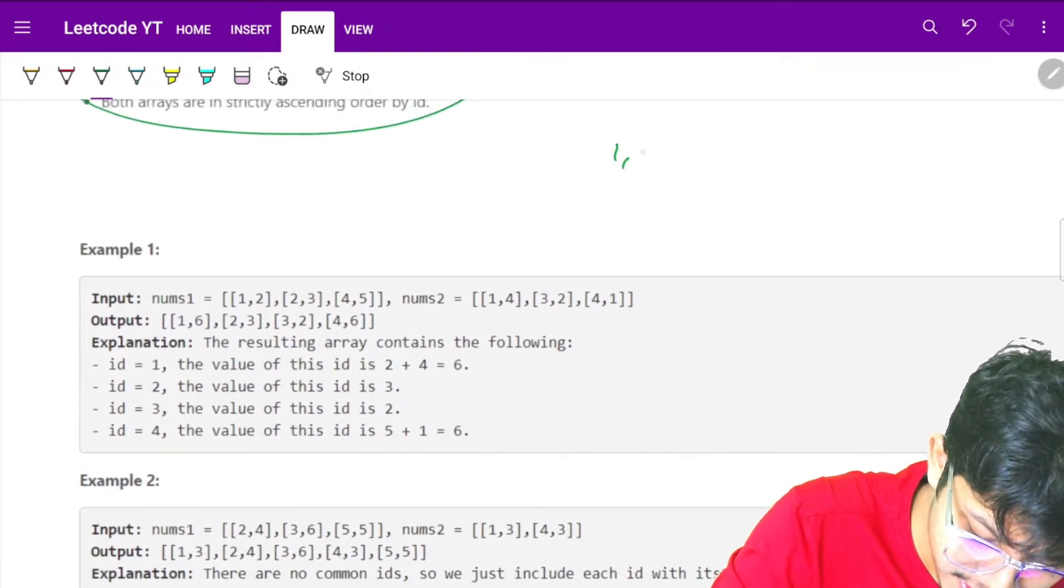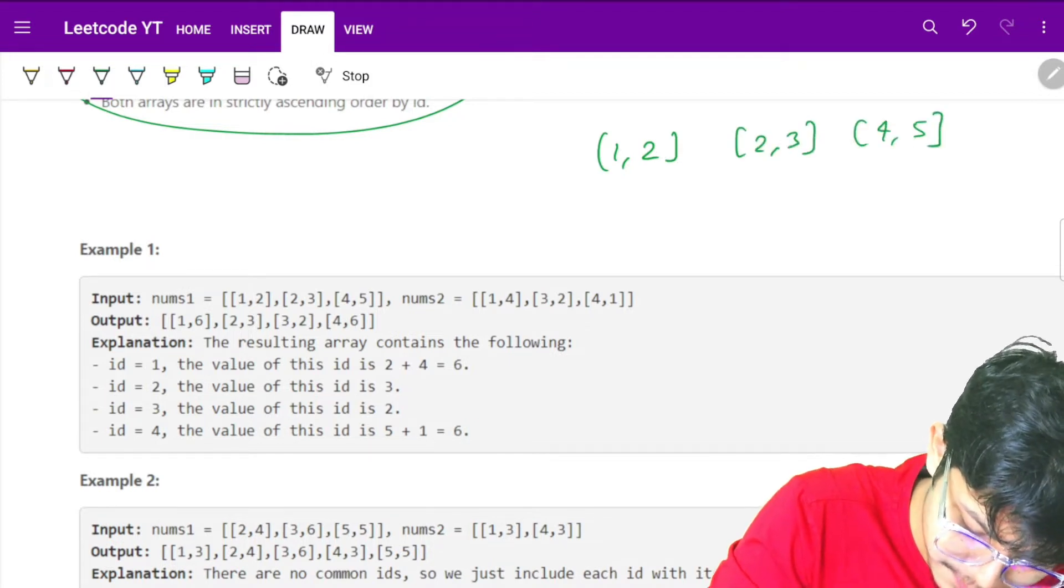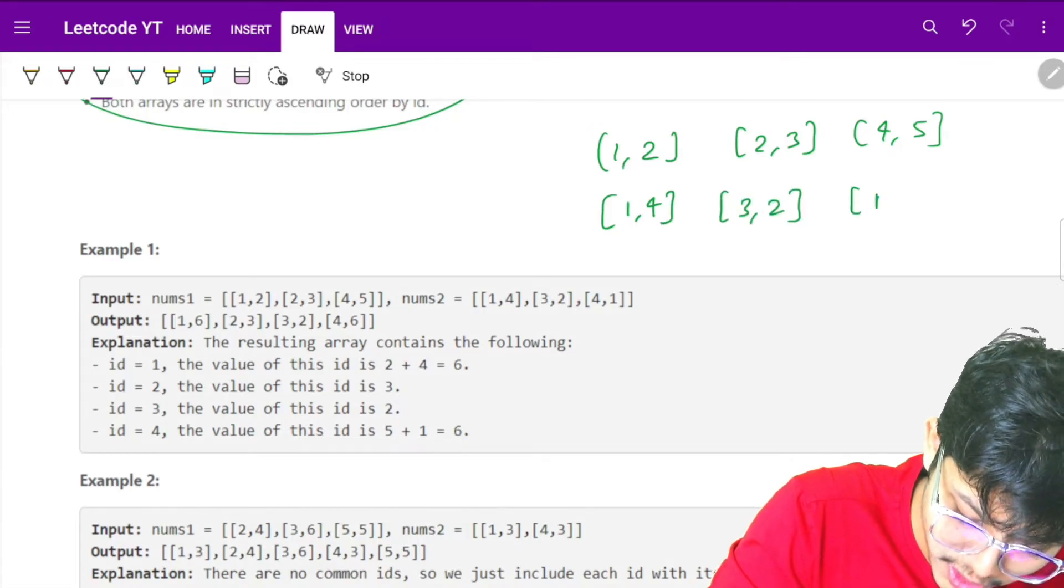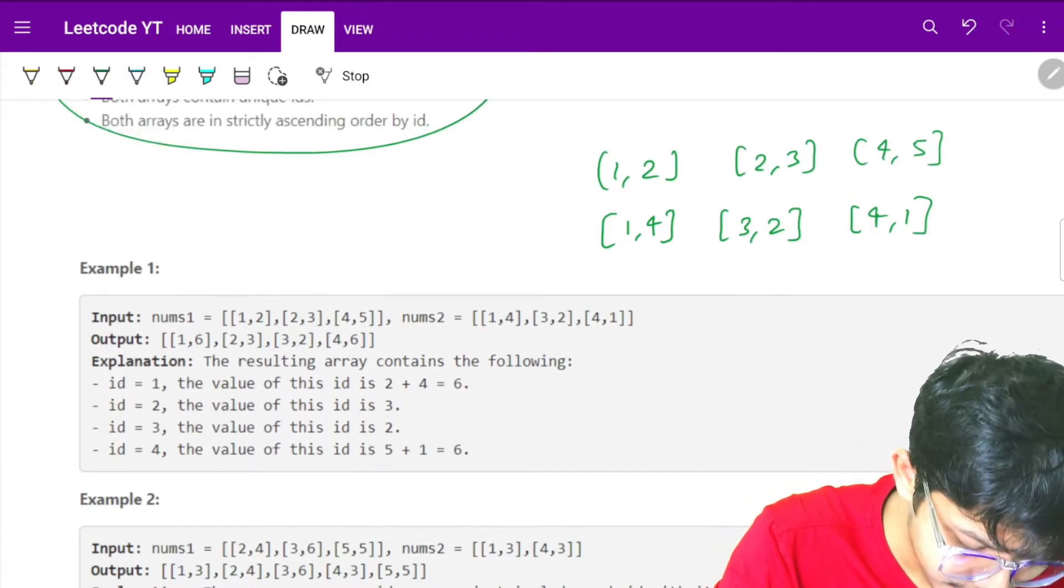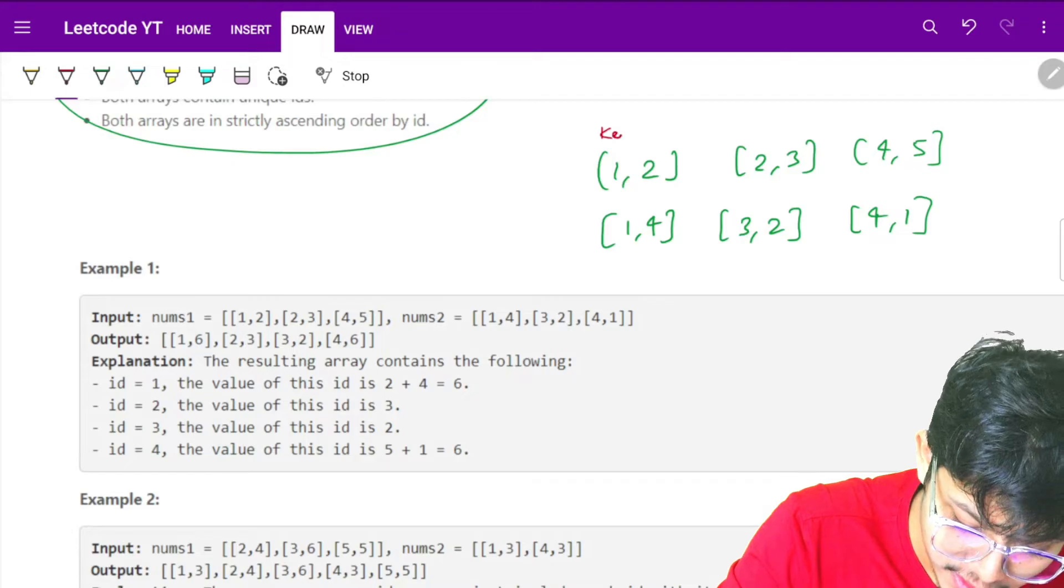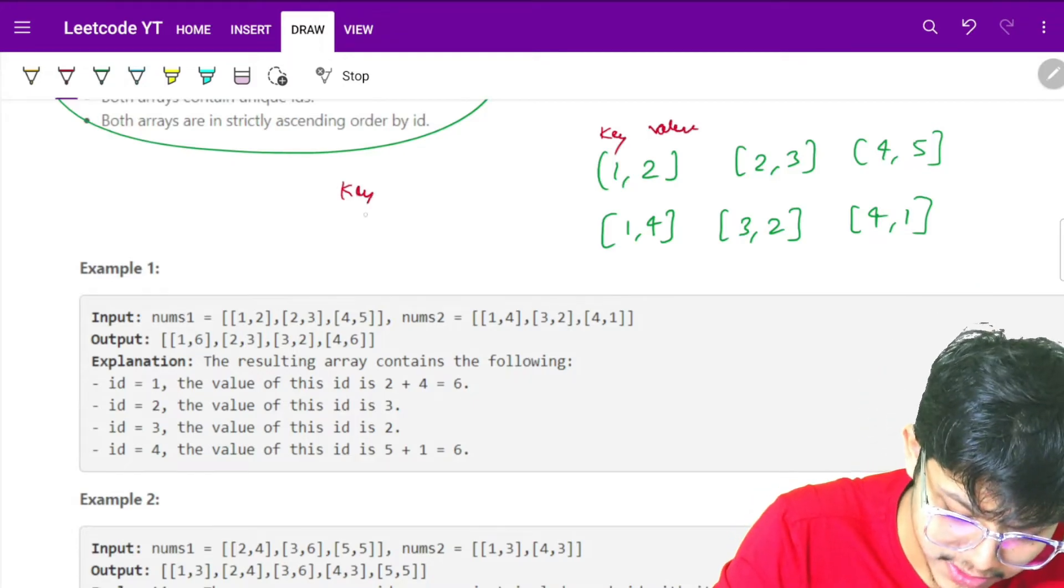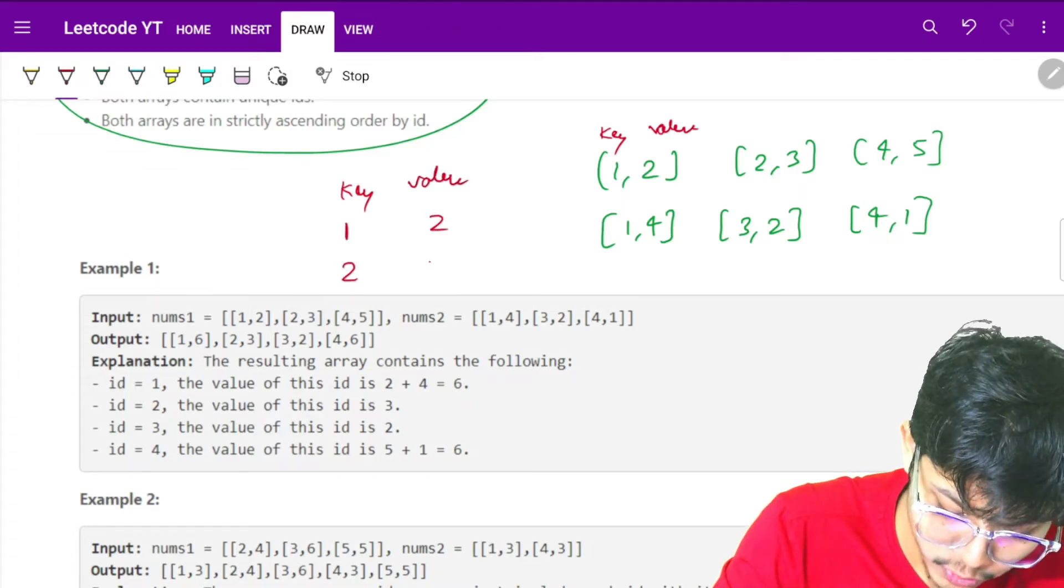The constraints are pretty small, so any brute force solution will work. The first approach that comes to mind is to store in a map for every corresponding key a value. For that key, I'll store a value.